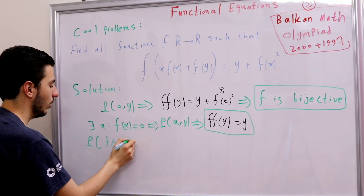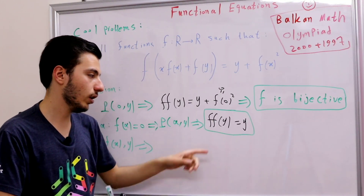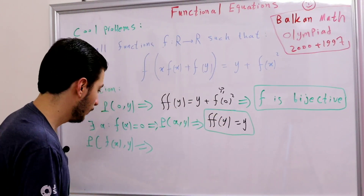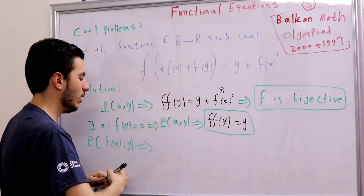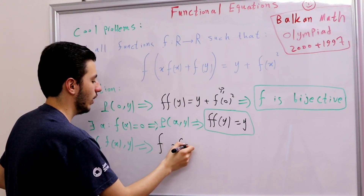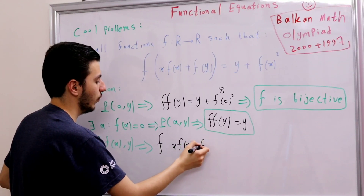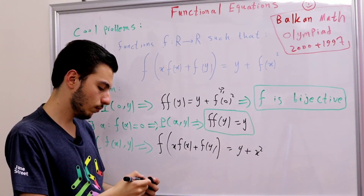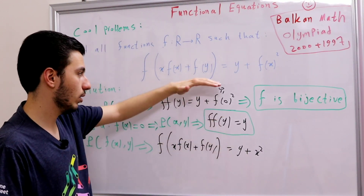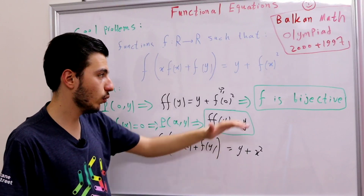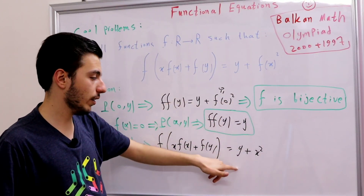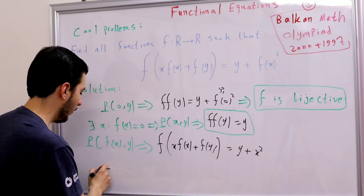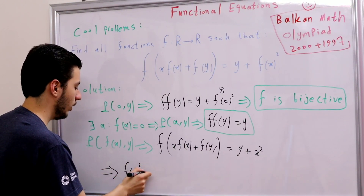Applying P(f(x), y): the left-hand side remains f(x) · f(x + f(y)) = y + x². Comparing with the original equation — the left-hand sides are identical — so the right-hand sides must match. y cancels y, giving us f(x)² = x². We are essentially done, because f(x)² = x² means f(x) is either x or −x.